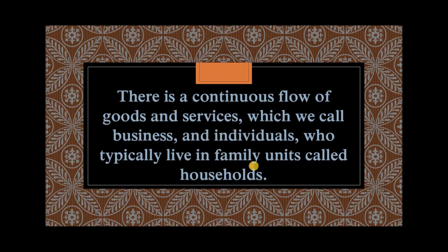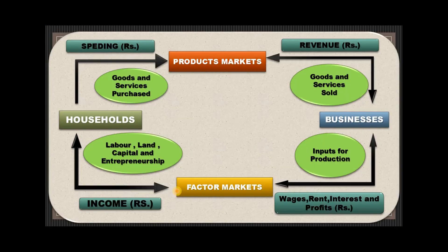There is a continuous flow of goods and services between businesses and individuals, who typically live in family units called households. National income is therefore a very important concept. The nature and direction of these exchanges between households are presented in the circular flow model of income and output.